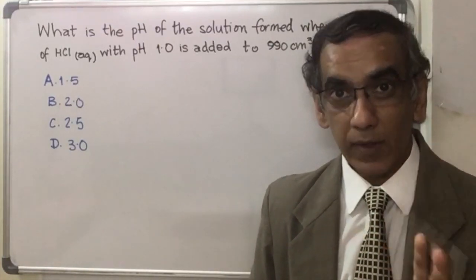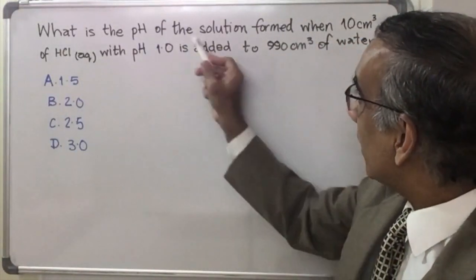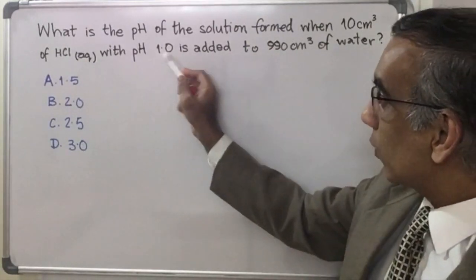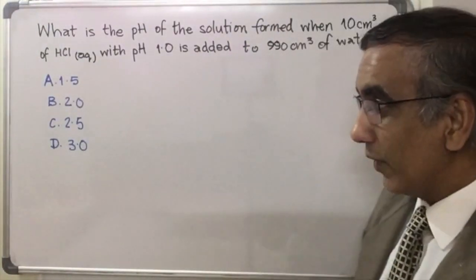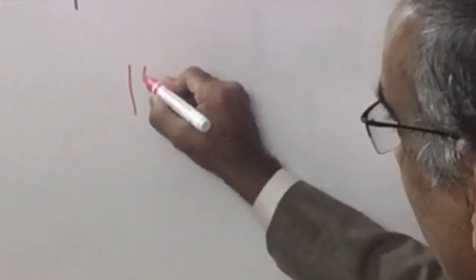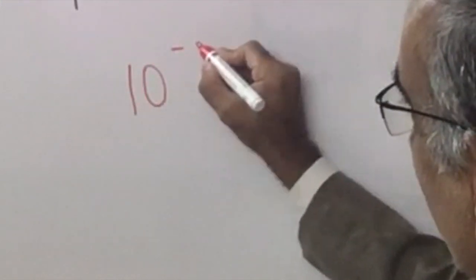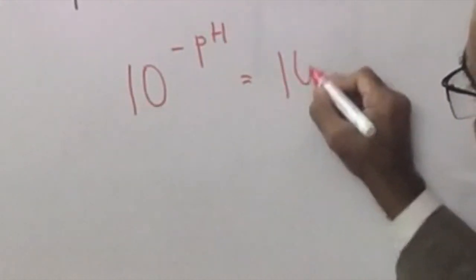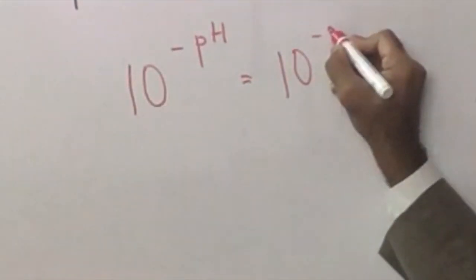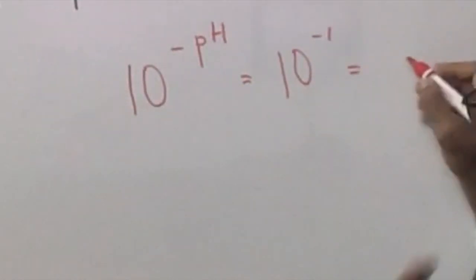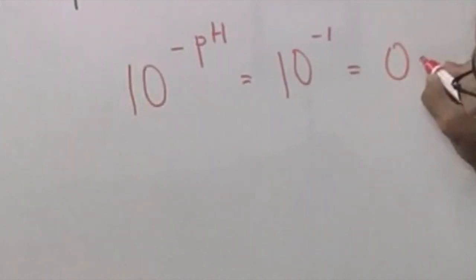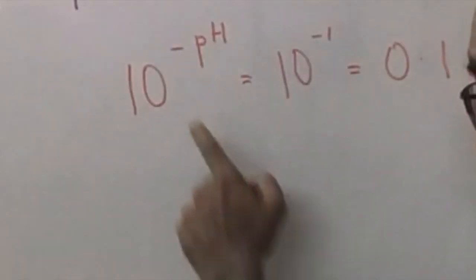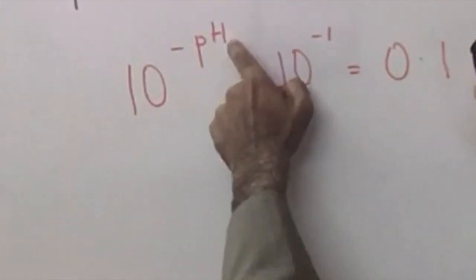So let's begin with the first step. We are told that the pH of a solution that is 10 cm³ in volume is 1.0. We can use the formula 10 to the negative pH, which would be 10 to the negative 1, and that gives 0.1 — that would be the concentration using the pH.